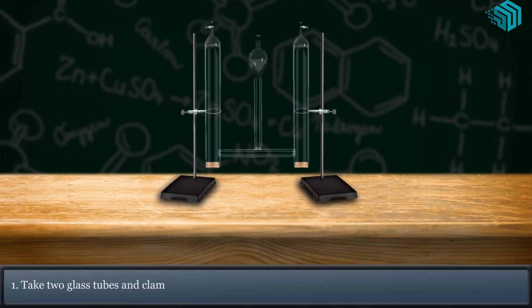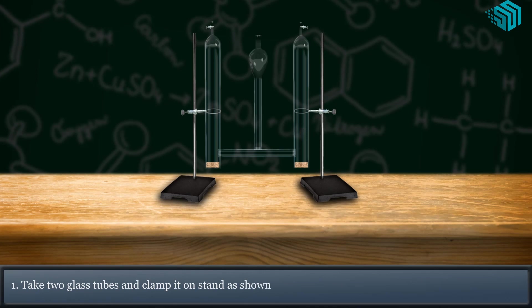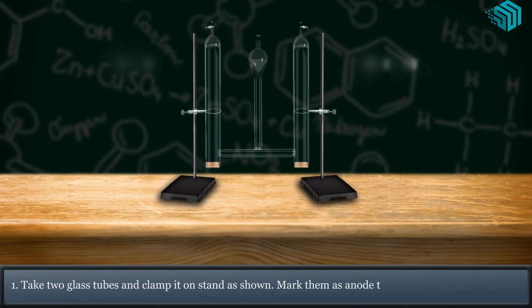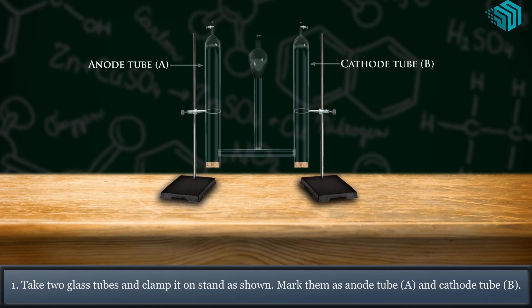Take two glass tubes and clamp it on stand as shown. Mark them as anode tube A and cathode tube B.